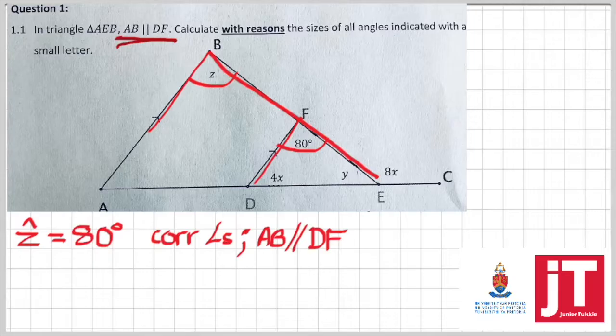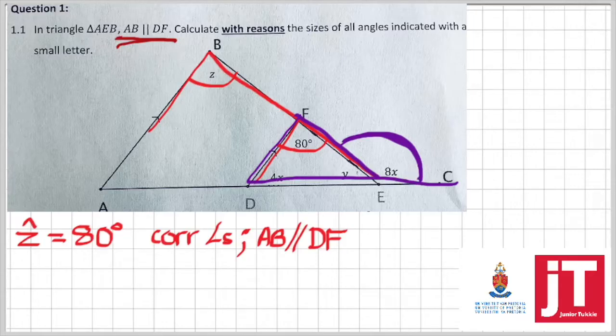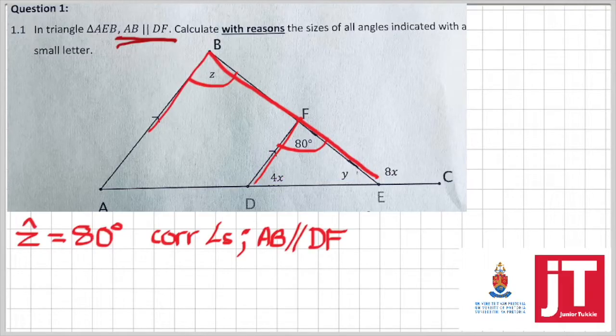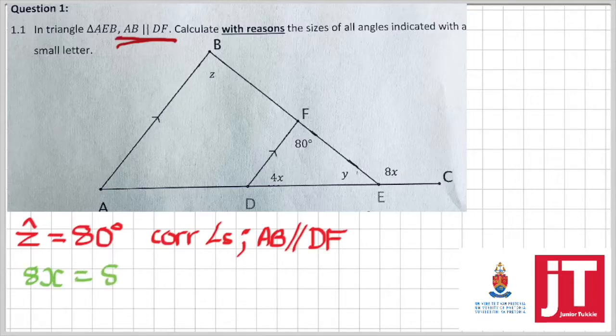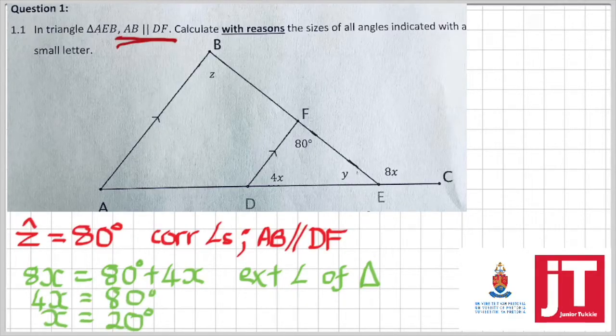We move on to the following. In this triangle here, the triangle EDF, we immediately recognize that the angle 8x, that is an exterior angle. And we know from theory that the exterior angle of any triangle is equal to the sum of the two opposite interior angles. And therefore, as a statement, I know that 8x has to be equal to 80 degrees plus 4x. Reason for that? Exterior angle of a triangle. Solving for x, we're going to get 4x is equal to 80 degrees, and getting our x value to be 20 degrees.